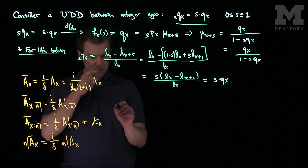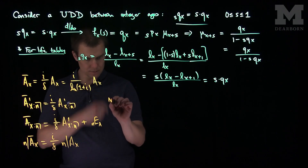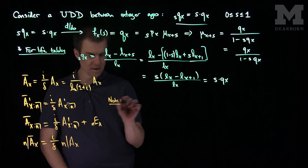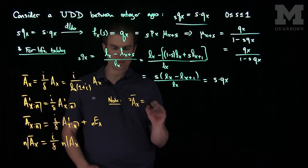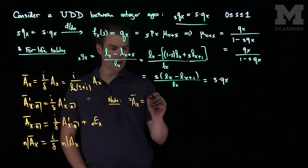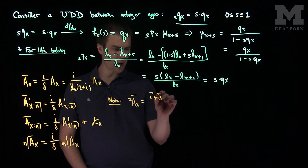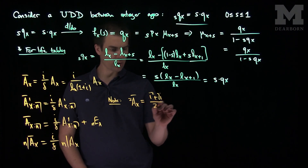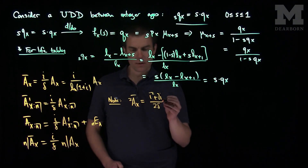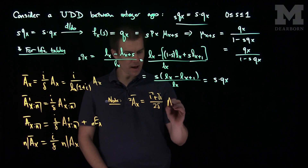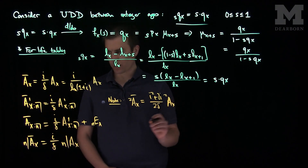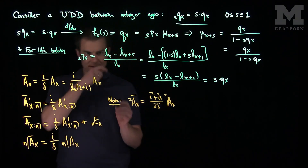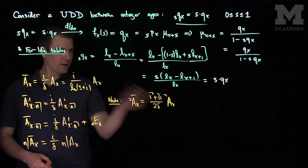One other note: if we do twice the force of mortality, then 2*A_x bar will equal (i squared plus 2i) over (2 delta) times the ordinary 2*A_x. So if we use twice the force of mortality, all the i's get replaced with i squared plus 2i and all the deltas get doubled.